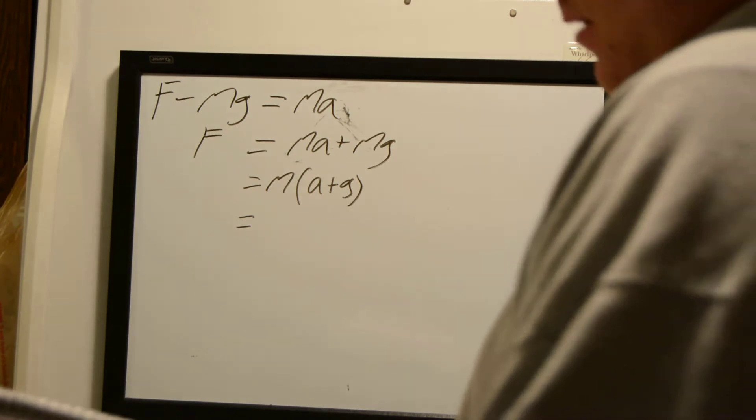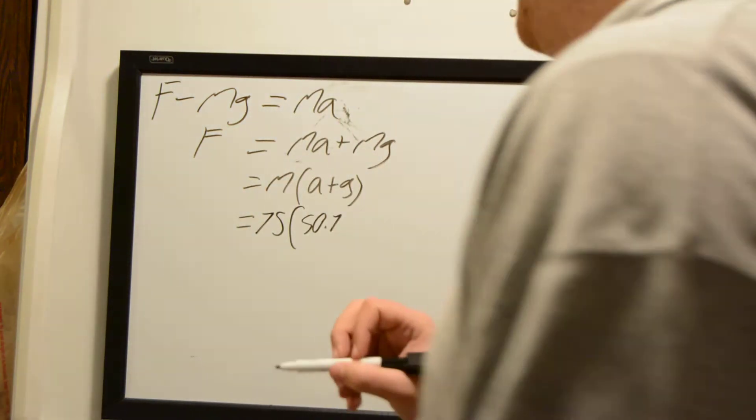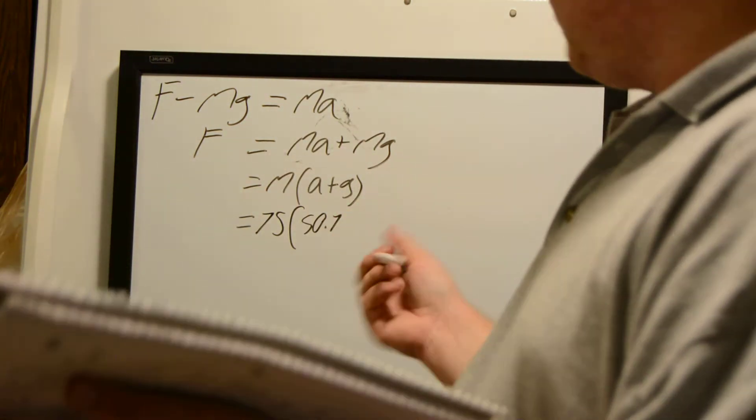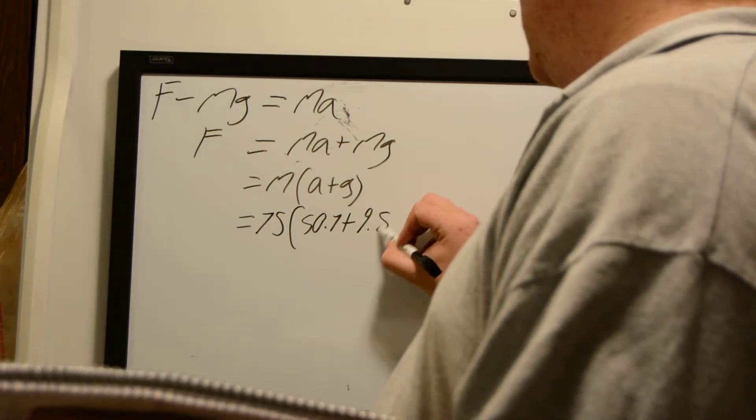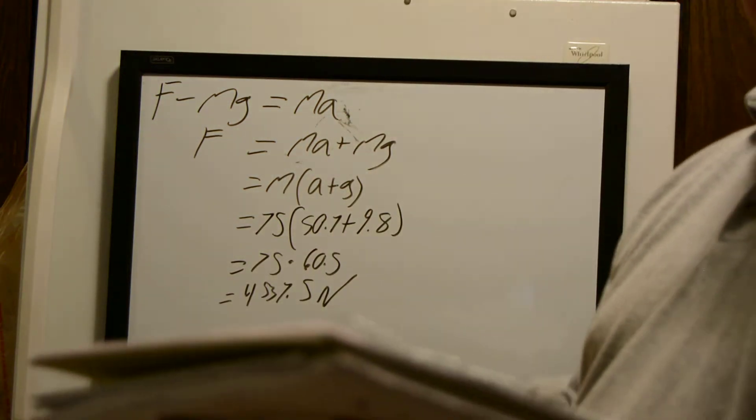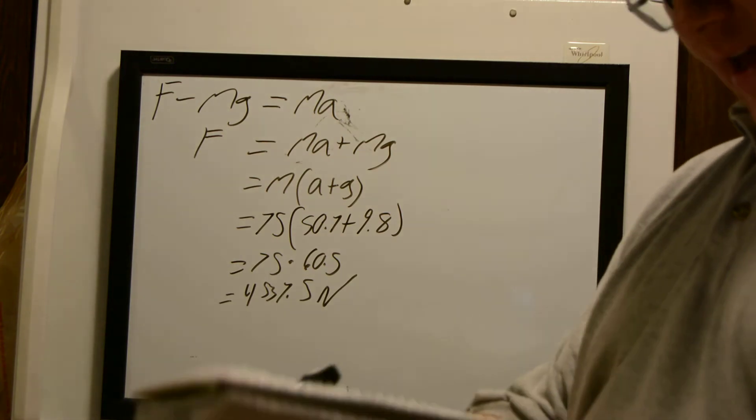Plugging in our values: the man's mass is 75 kilograms, his acceleration from part B is 50.7 m/s², and we add the acceleration due to gravity, 9.8 m/s². That gives us 75 times 60.5, which equals 4537.5 newtons as the force acting on him as he decelerates.